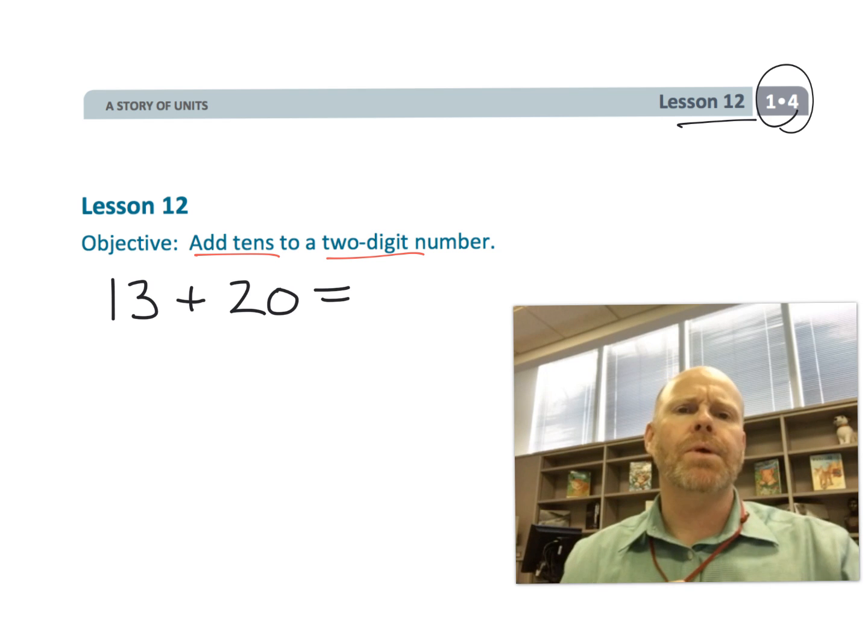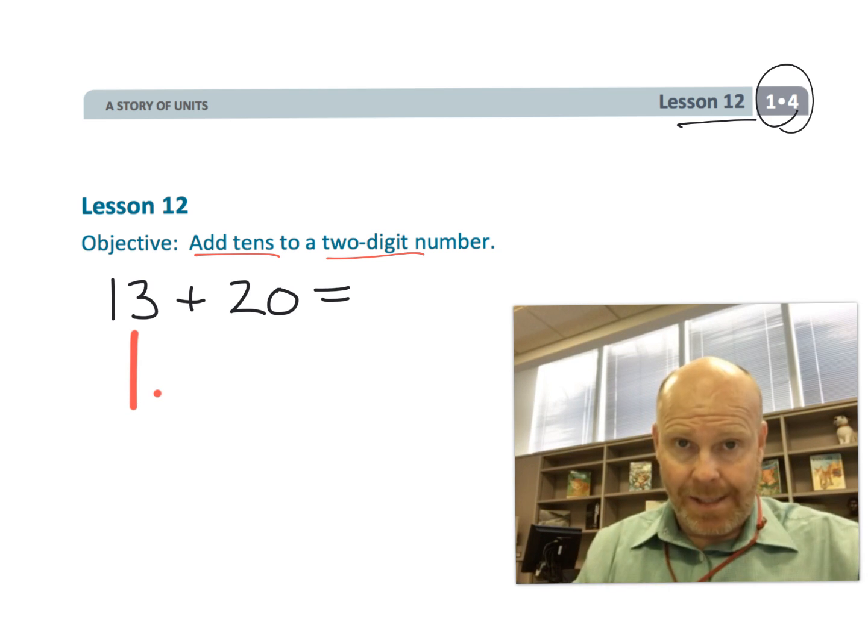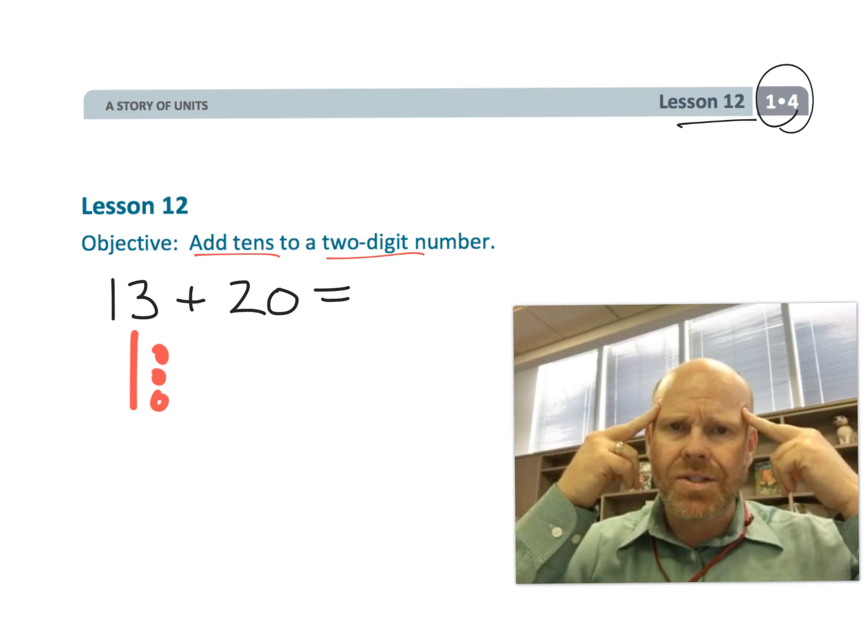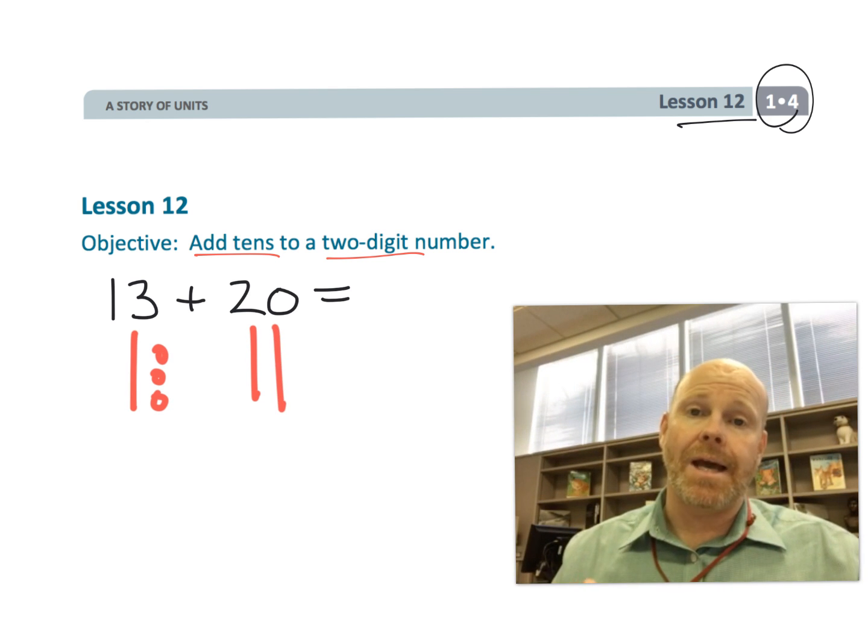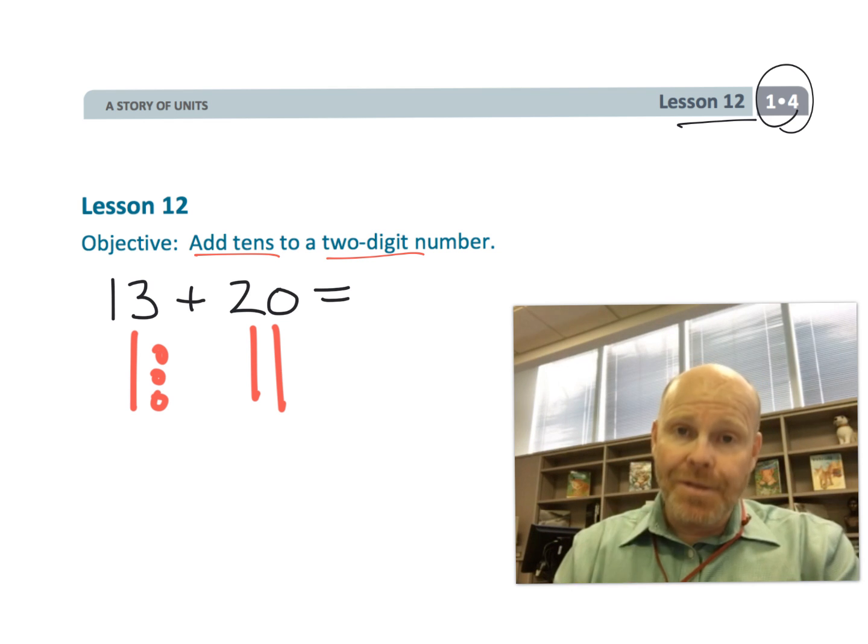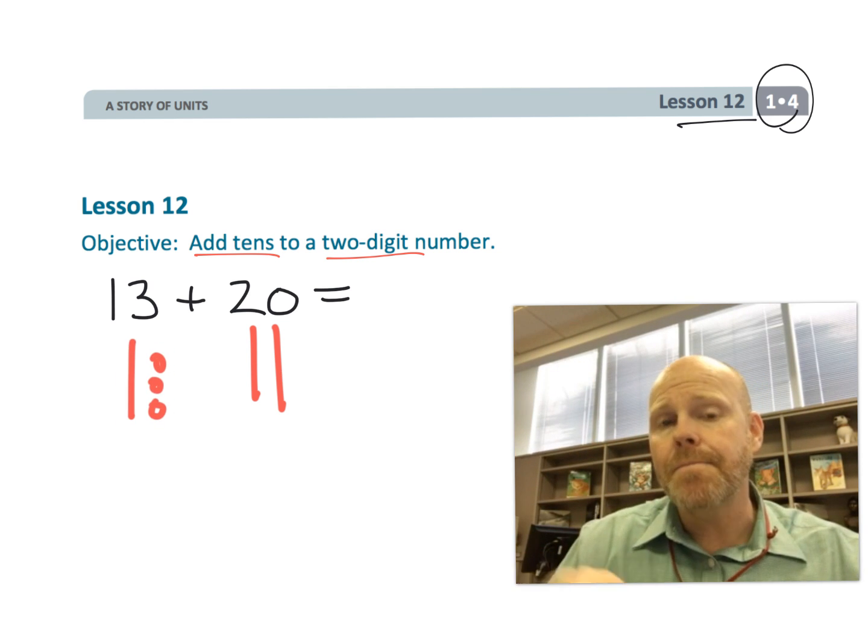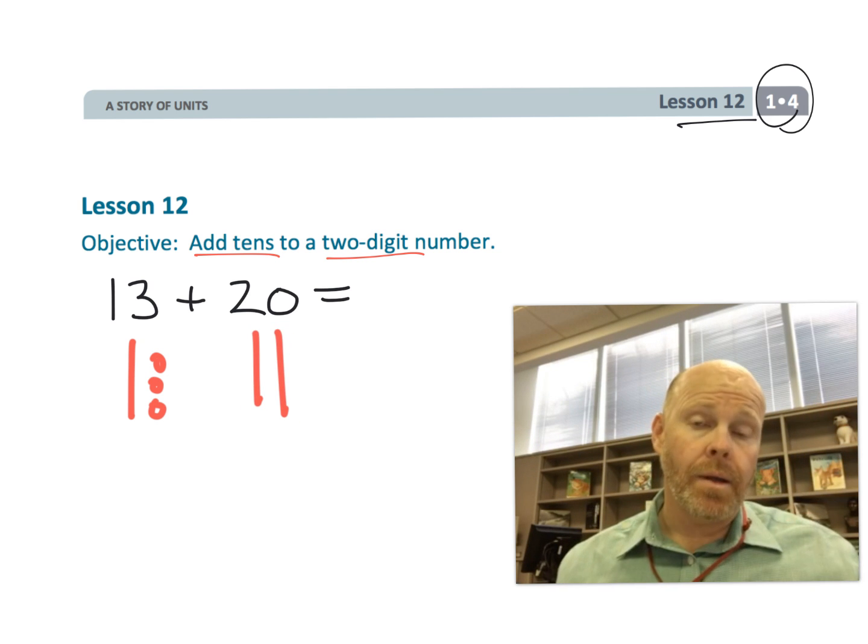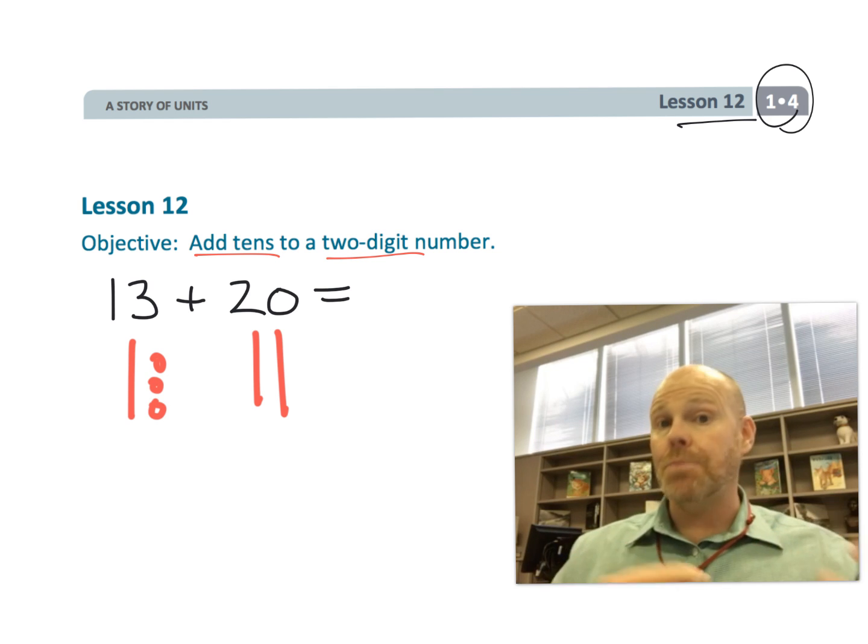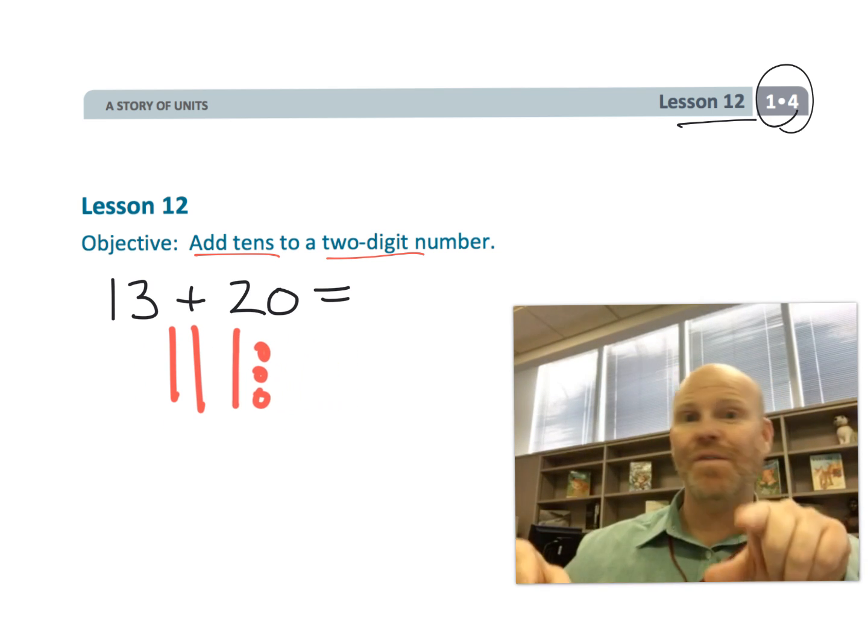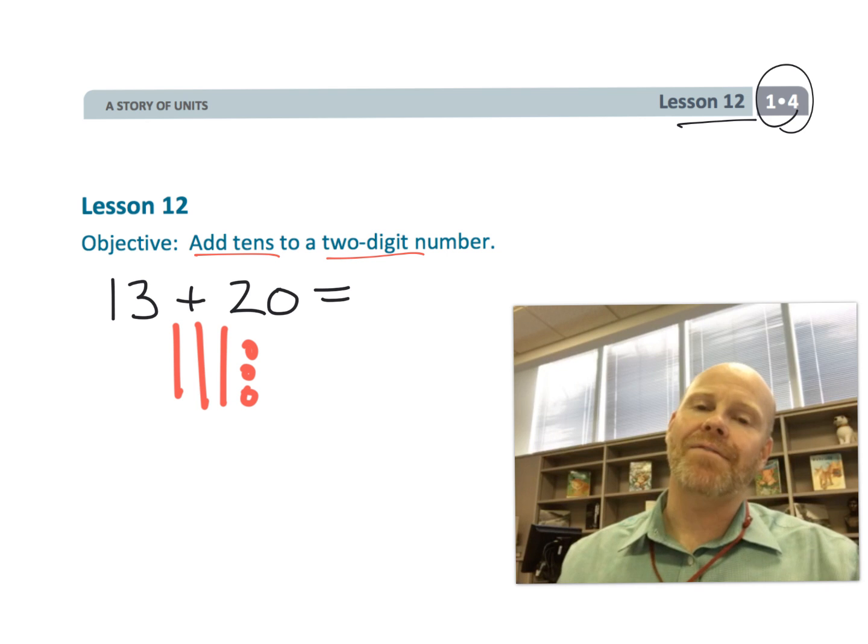For example, let's say we were going to do 13 plus 20. The idea is we want students to recognize that 13 is a quick 10 plus three ones, and that 20 is two more quick tens. Then using the commutative property, we can move those quick tens around, and we see that we have the answer 33, three tens plus three ones.